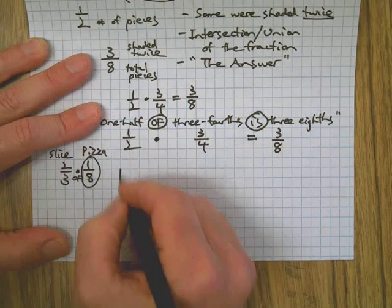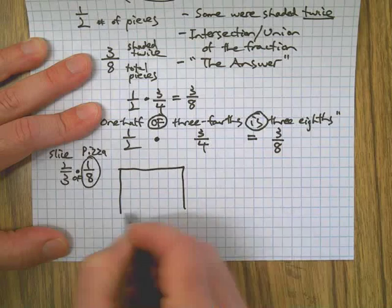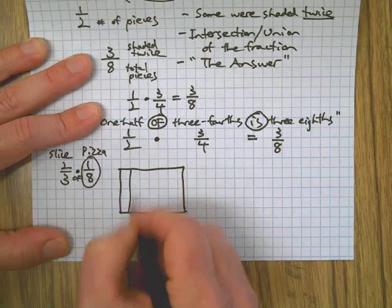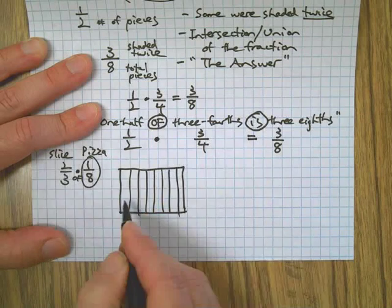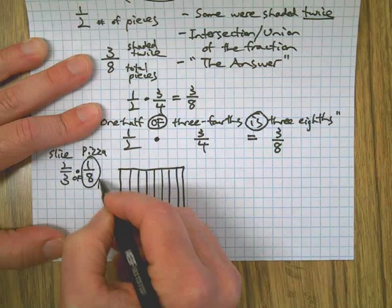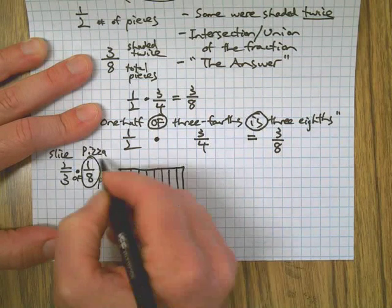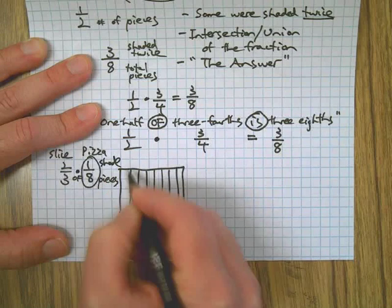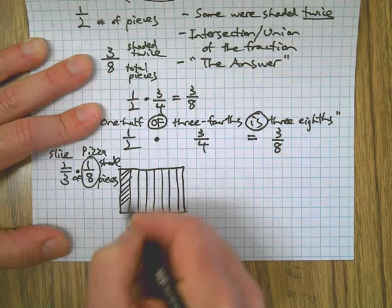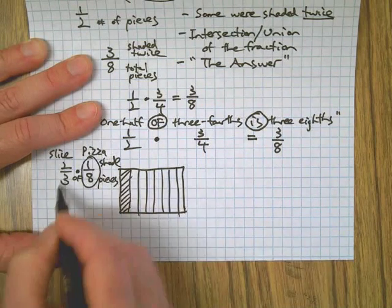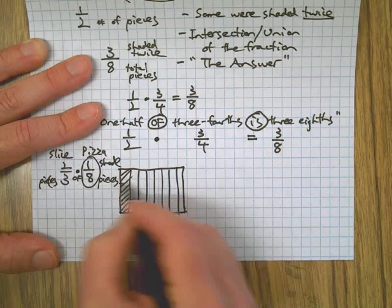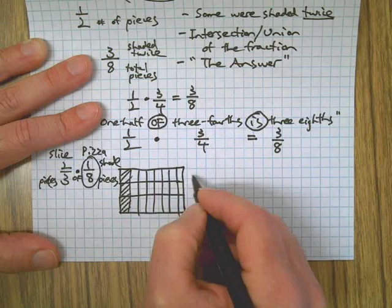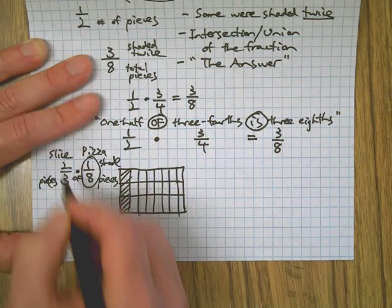So first I'm going to represent one-eighth. There's eight pieces, and I'm going to shade one of them.